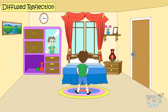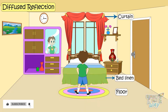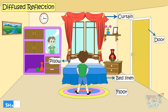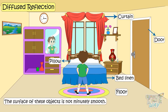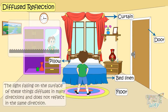But you are not able to see your own image in this curtain, your floor, on the bed linen, on the pillows, and on the doors. Why? Because the surface is not minutely smooth. Even the fabric has roughness, and even the door has some roughness — very minute roughness. All this roughness leads to diffuse reflection.